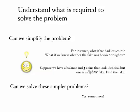How do we solve this problem? One approach is to simplify the problem — to find a version we can solve and go from there to the more difficult one. For instance, instead of 12 coins, what if we had fewer? Or what if we knew whether the fake coin was heavier or lighter? Here's a simpler version: suppose we have a balance and three coins that look identical, but one is a lighter fake. Find the fake. Sometimes we can solve these simpler versions of the problem, so let's look at this one.